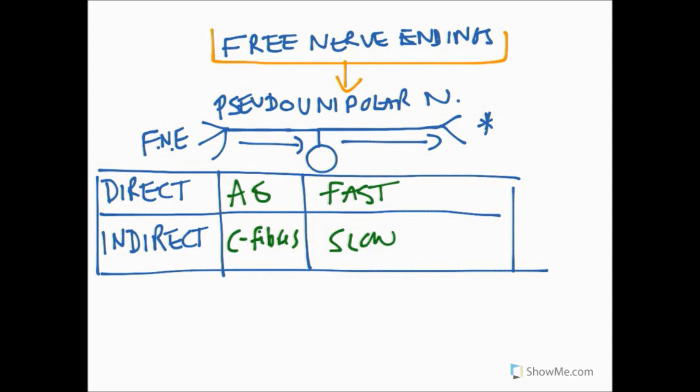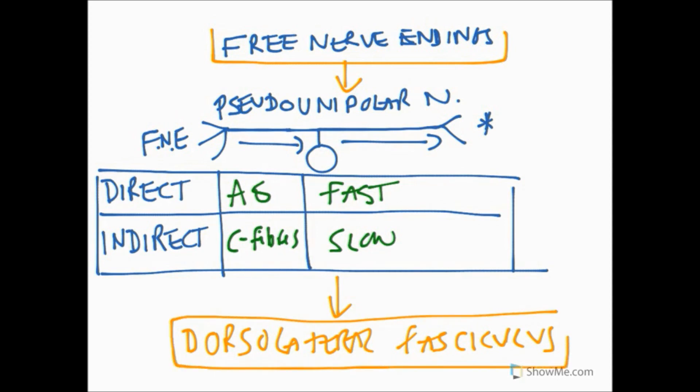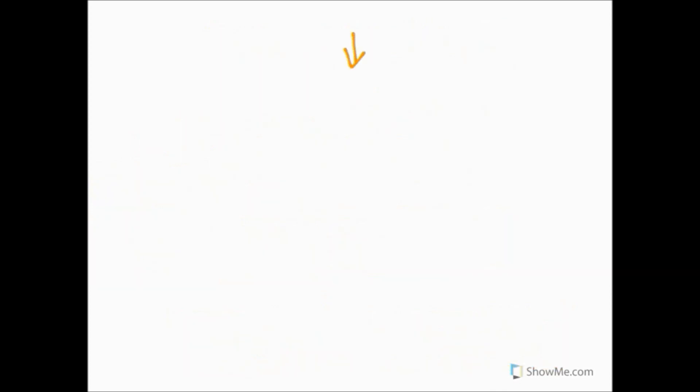Before we separate their different journeys we just need to get our first order neuron with this free nerve ending on the end to the gray matter of the spinal cord. Eventually it's going to reach part of the gray matter known as the dorsolateral fasciculus. Eventually our first order neuron, whether it be carrying direct fast pain fibers or indirect slow pain fibers, will be traveling in the same way as the same nerve and reach the dorsolateral fasciculus which is in the gray matter of the spinal cord.